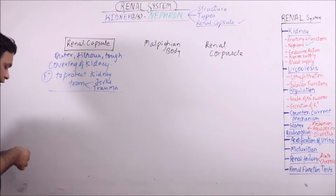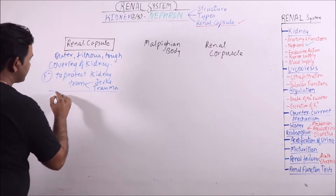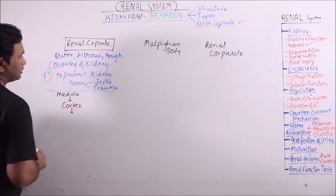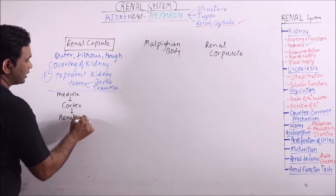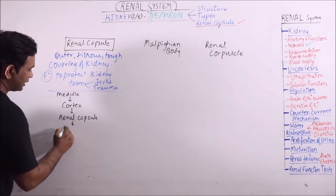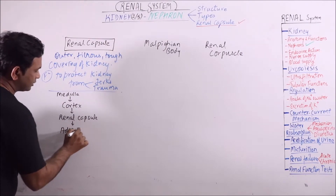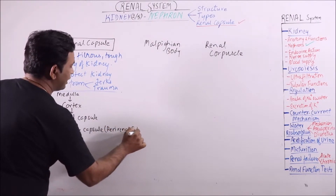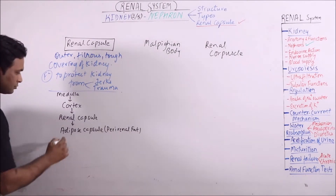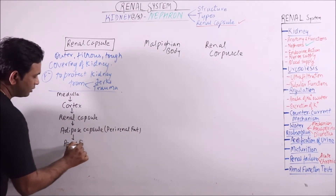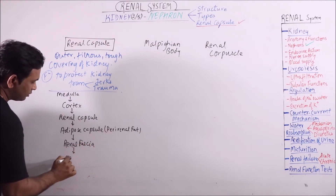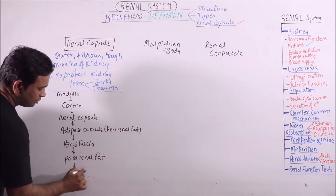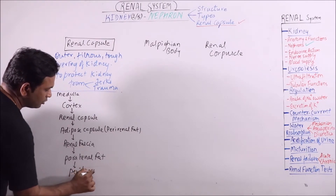If we move in a kidney from inside to outside, then first of all medulla is observed, then cortex, then outer to cortex renal capsule is there, then adipose capsule is there — which is basically peri-renal fat — then renal fascia is there, then para-renal fat is there, and then peritoneum is there.